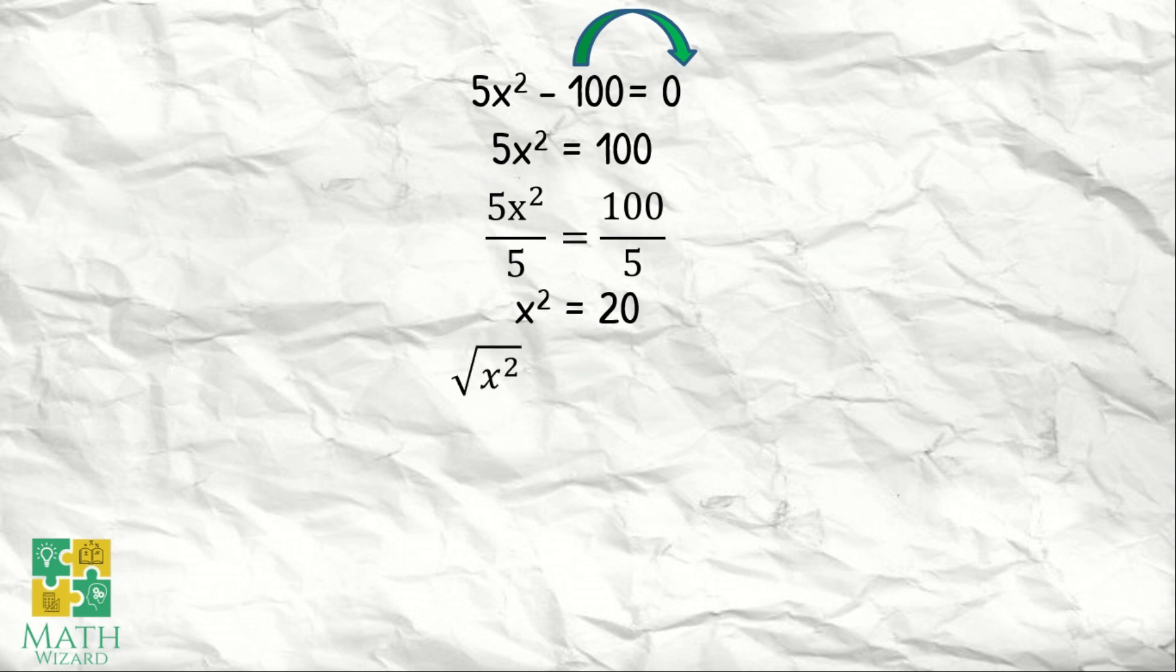Get the square root of both sides. Square root of x squared and square root of 20. For 20, we can separate it into 4 times 5, or factors of 20 are 4 times 5.